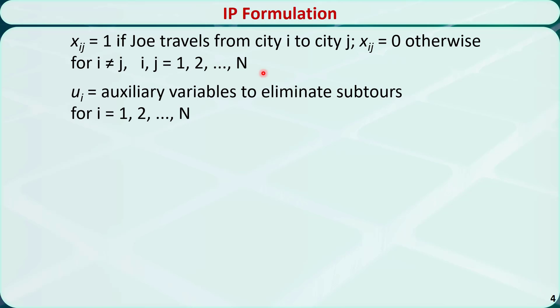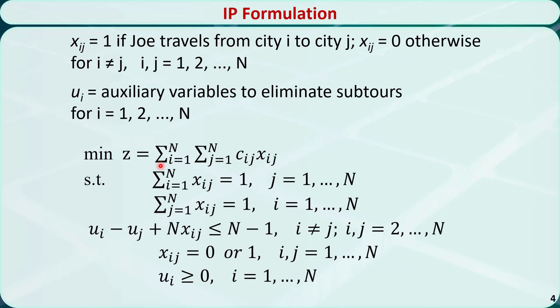We also need to define an auxiliary variable ui for each city i. This is a minimization problem. The objective function is the total distance traveled, so it is the sum of the distance from each section of the tour.